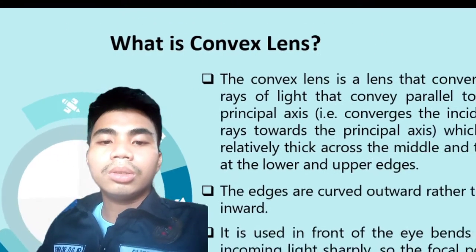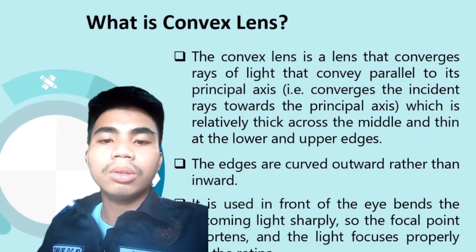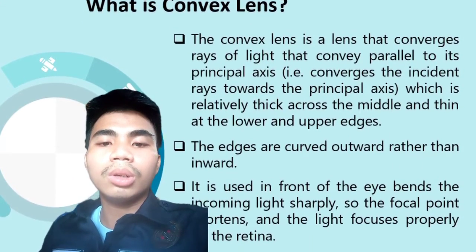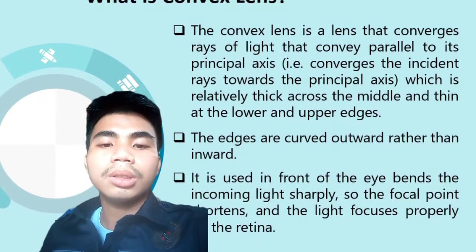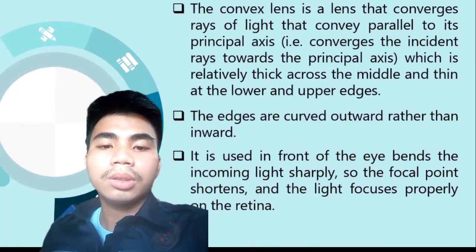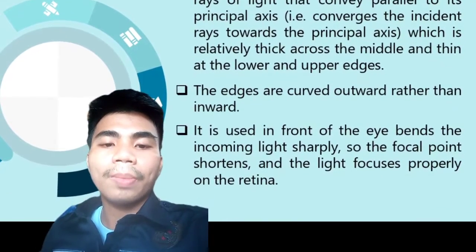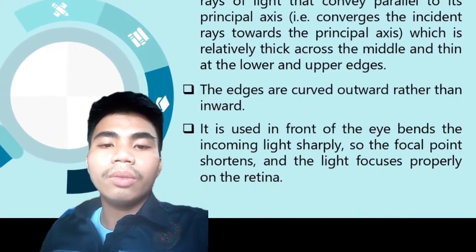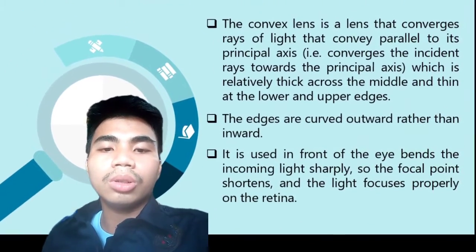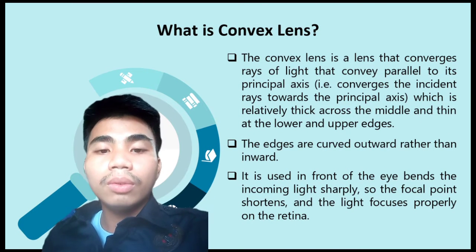A convex lens is a lens that converges rays of light that convey parallel to its principal axis. It converges the incident rays towards the principal axis, which is relatively thick across the middle and thin at the lower and upper edges. The edges are curved outward rather than inward. It is used in front of the eye, bends the incoming light sharply so the focal point shortens and the light focuses properly on the retina.